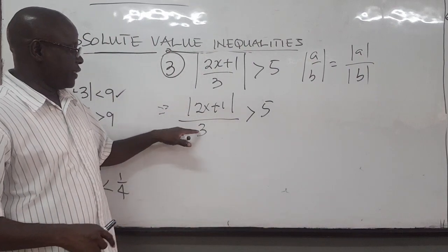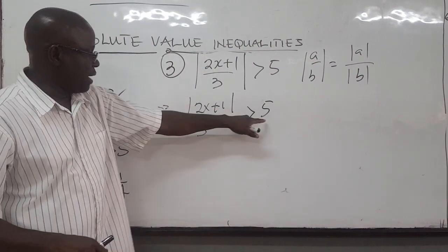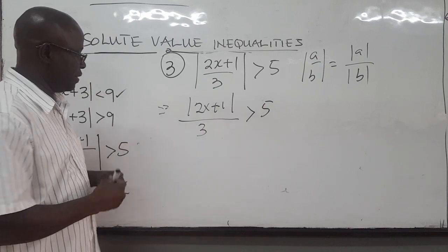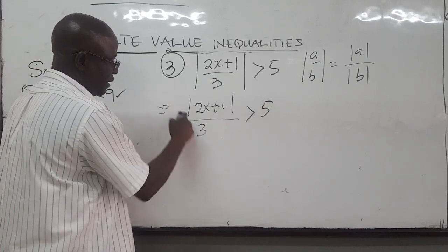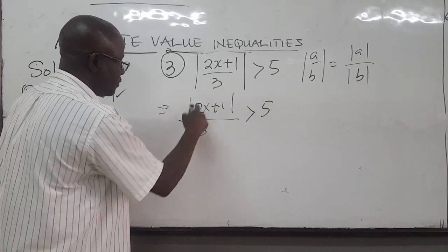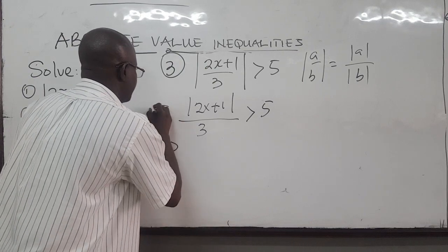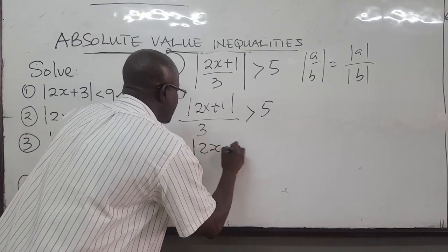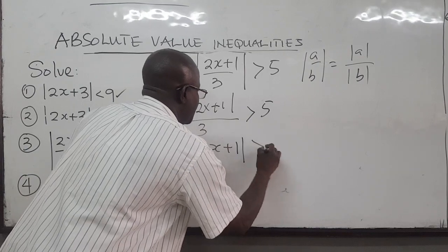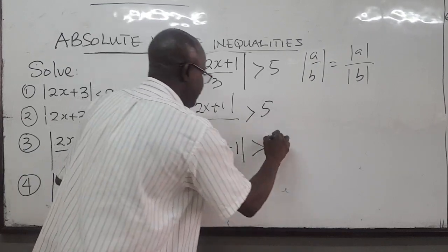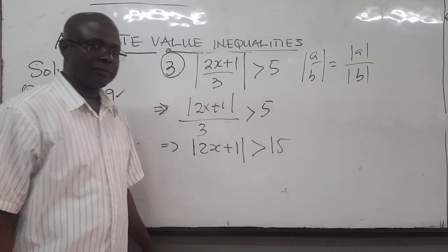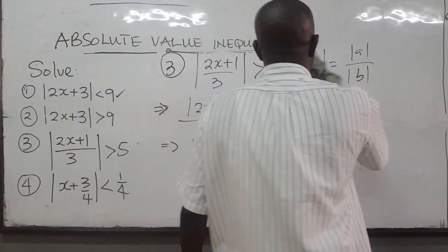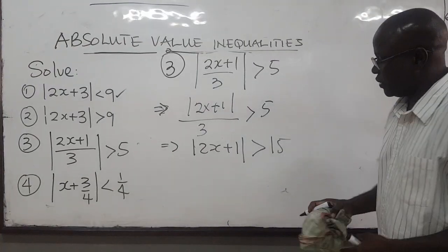Because 3 is positive, we can multiply both sides by 3 and the inequality sign remains the same. Multiplying through, the 3 cancels, giving us the absolute value of 2x plus 1 is greater than 15. So we now have this simpler inequality to work with.